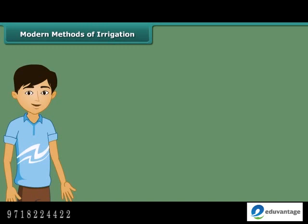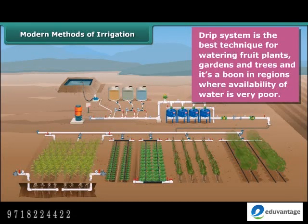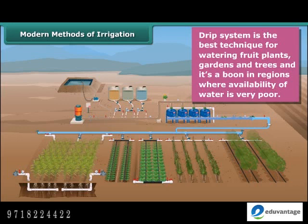Let us now know modern methods of irrigation. In a sprinkler system, most useful on uneven land where sufficient water is not available, perpendicular pipes with rotating nozzles on top are joined to the main pipeline at regular intervals. When water flows through the main pipe under pressure with the help of a pump, it escapes from the rotating nozzles and gets sprinkled on the crop as if it is raining. In a drip system, water falls drop by drop just at the position of the root. It is the best technique for watering fruit plants, gardens and trees, and is a boon in regions where water availability is very poor.